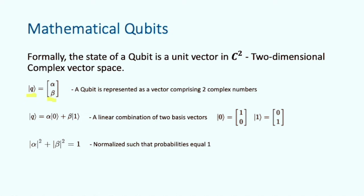As mentioned previously, our qubit can be represented as a linear combination of two basis vectors. Here, our qubit psi is represented by alpha ket0 plus beta ket1, where alpha and beta are complex numbers representing the probability amplitude of the qubit being in that basis state.